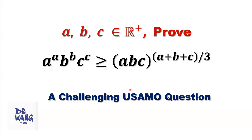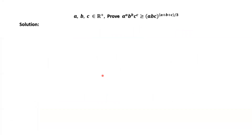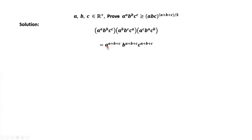This is a very challenging question. Notice that a^a · b^b · c^c times a^b · b^c · c^a times a^c · b^a · c^b equals a^(a+b+c) · b^(a+b+c) · c^(a+b+c).